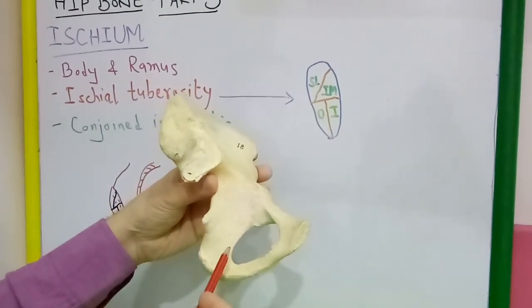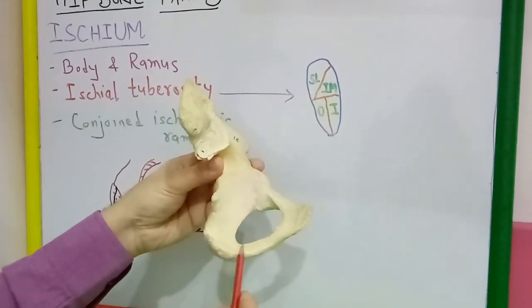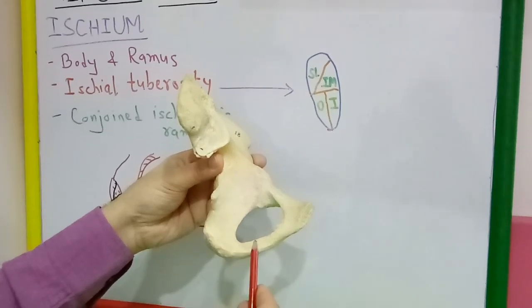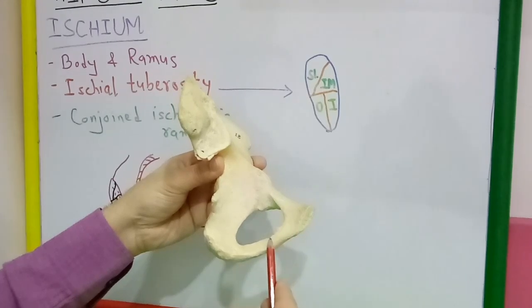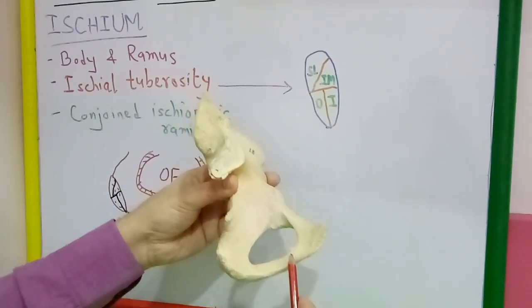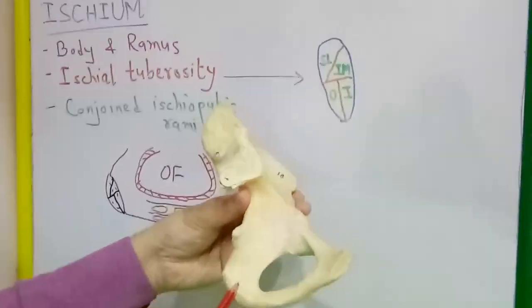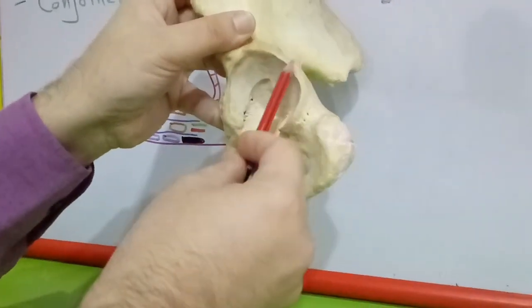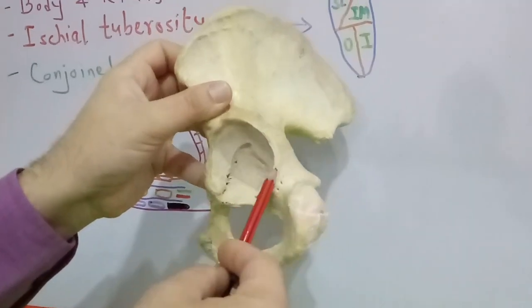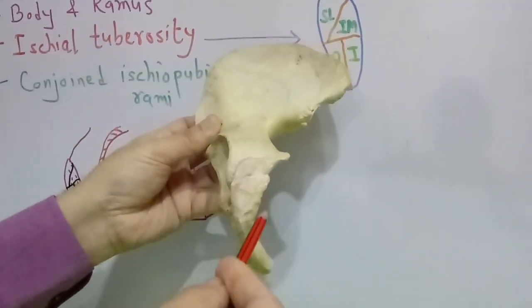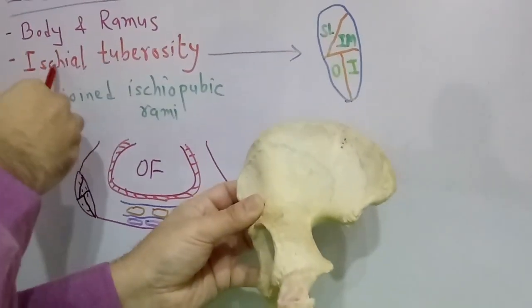The ischium has two parts: this is the body and this is the ramus of ischium. The ramus of ischium meets with the inferior ramus of pubis and forms a conjoint ischiopubic ramus. The body has an upper end which forms the posterior inferior two-fifths of the acetabulum, and a lower end in the form of a large rough tuberosity known as the ischial tuberosity.